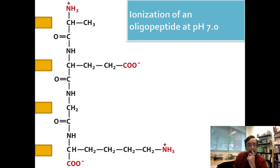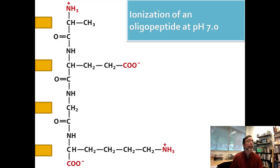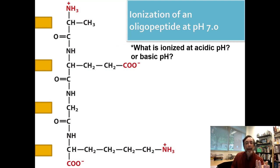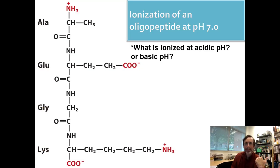Let's start at the N-terminus and name this one. It is alanine, glutamate, glycine, lysine — lysine with an L, I want to be very clear about that. So it would be A, E, G, K. You also have the question of what is ionized at acidic pH or basic pH. This is what is ionized at pH 7.0. Your worksheet includes thinking through what's going to happen to each of these pKa's — you have two acidic pKa's and two basic pKa's, and you can work from there.